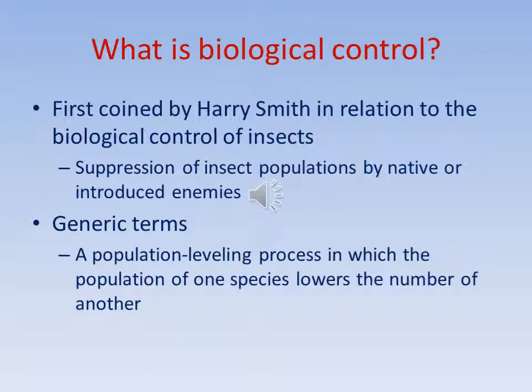What is Biological Control? The term Biological Control was first coined by Harry Smith in relation to the biological control of insects — the suppression of insect populations by native or introduced enemies. In generic terms, it is a population-leveling process in which the population of one species lowers the number of another.